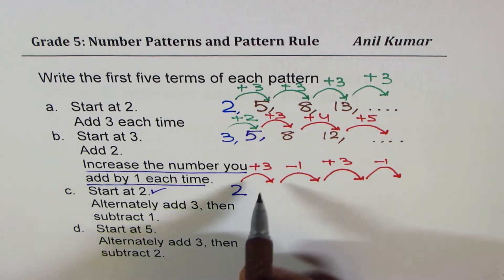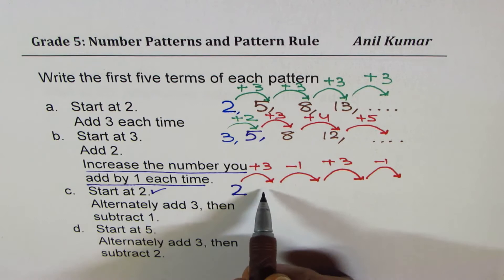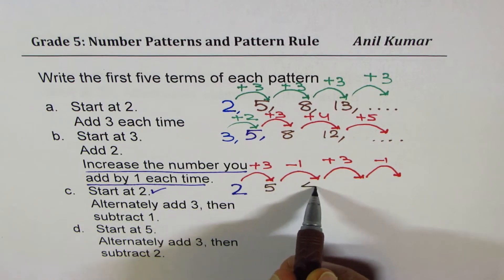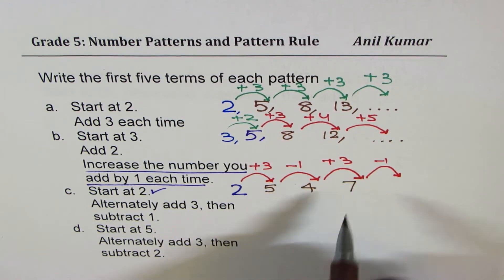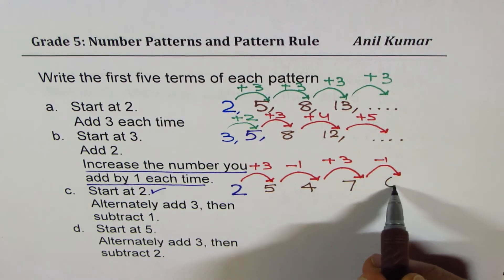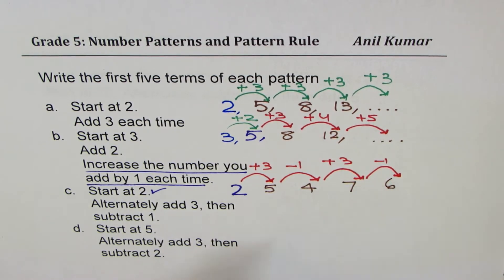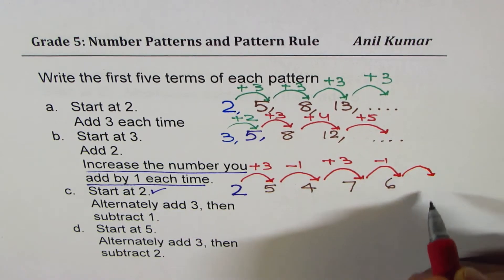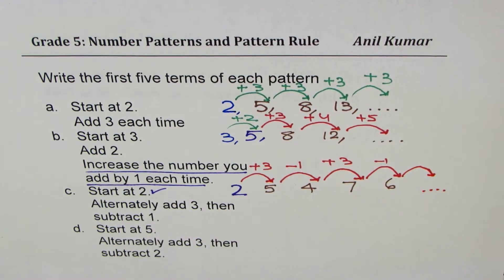So if I add three to two, I get five. Take away one is four. Adding three is seven. Take away one is six. Figure out the next number and write it down. I hope by now you have got the idea.